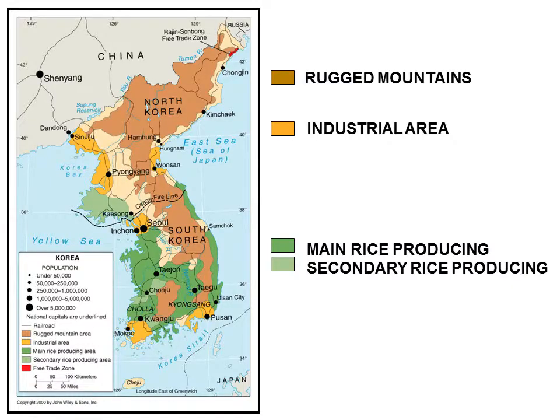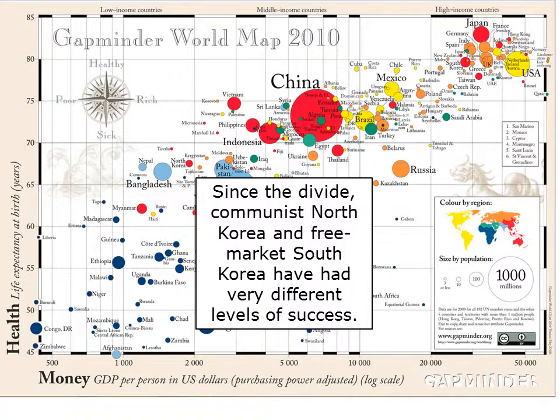This map highlights where the rice-producing crops are and where the rugged mountains are. Since the divide, Communist North Korea and Free Market South Korea have had very different levels of success.